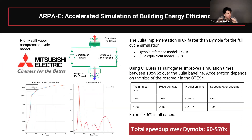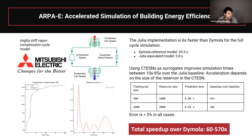This behavior shows up all over the place. For example, here is an 8,000-equation model — a heat cycle — where, versus Dymola, one of the leading Modelica compilers, we trained a continuous time echo state network and got something about 570 times faster than the leading Modelica compilers. So this surrogate technique as part of the simulation process really leads to some very nice results.